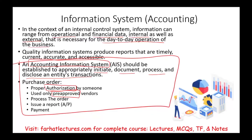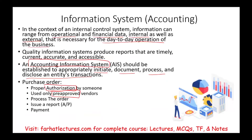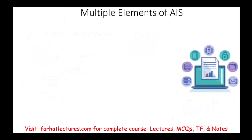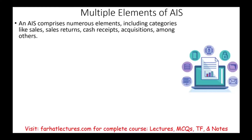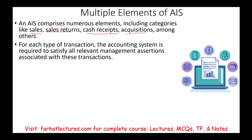The company could have many information systems beyond accounting, but they should always serve the day-to-day operation of the business, including internal and external customers. The accounting information system can have numerous components — modules for sales, sales returns, cash receipts, acquisitions, inventory, and so on. For each type of transaction, the AIS is required to satisfy all of the relevant assertions associated with those transactions.